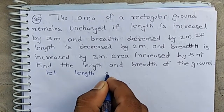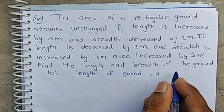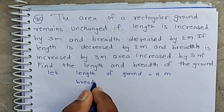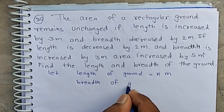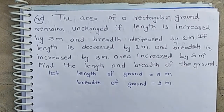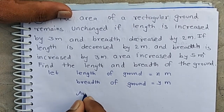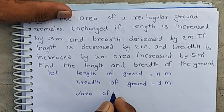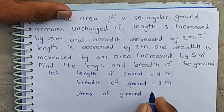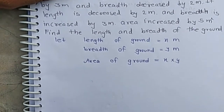Let the length of the ground be x meters and the breadth of the ground be y meters. Now, according to the question, the area of the ground when length is x and breadth is y is given by x into y.